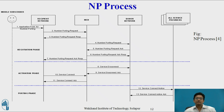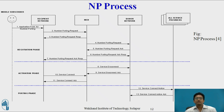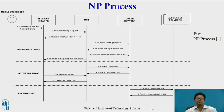The figure shows the NP process, which consists of three phases: negotiation phase, activation phase, and porting phase. In the negotiation phase, the mobile subscriber fills the application form for number porting and sends it to the recipient network. From the recipient network, the number porting request is sent to MCH; MCH responds to the recipient network and forwards the request to the donor network. All seven steps are followed in the negotiation phase.